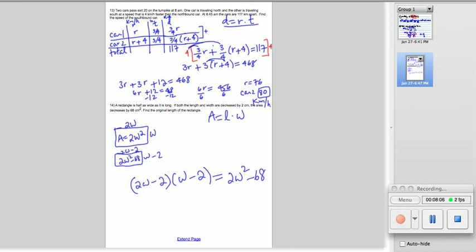Now, we're going to FOIL this and solve for W. So, 2W times W is 2W squared. 2W times negative 2 is negative 4W. Negative 2 times W is negative 2W. And negative 2 times negative 2 is positive 4.